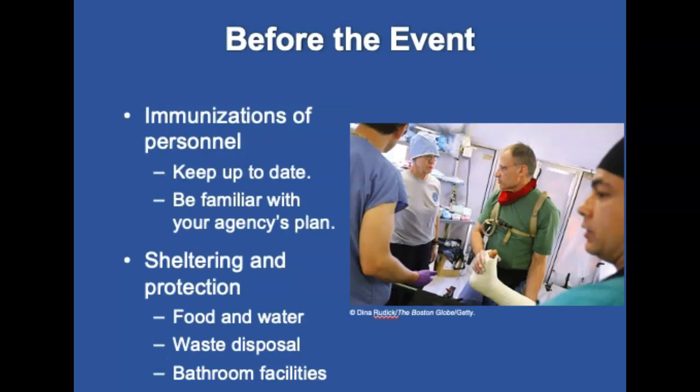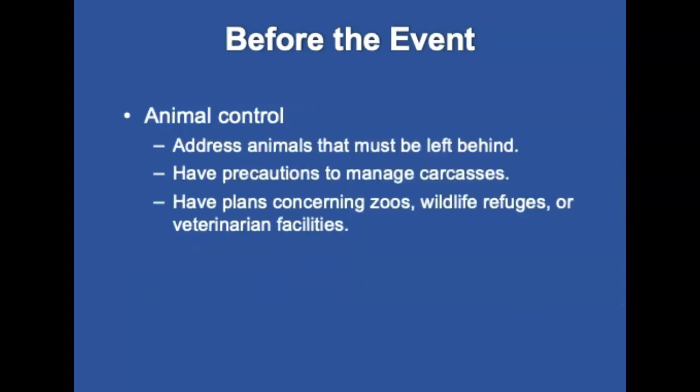Keep immunizations up to date. The designated control officer or service's medical director should know the health status of all employees. Be familiar with your agency's inoculation plan pertinent to a specific emergency. Plans will include information on sheltering community members and personnel, including food, water, waste disposal, and bathroom facilities. Also address animal control: if assisting in evacuations, address pets that must be left behind. Rural areas must have precautions to manage carcasses, and plans should address zoos, wildlife refuges, and veterinary facilities.